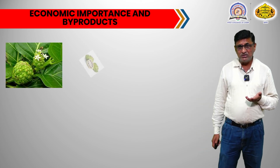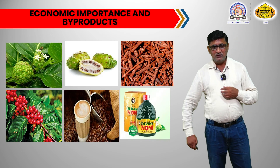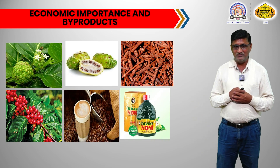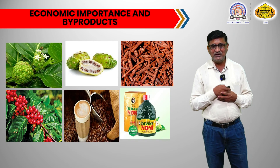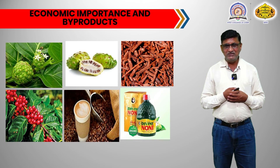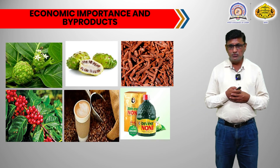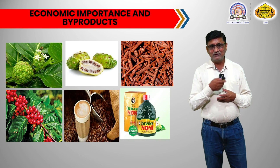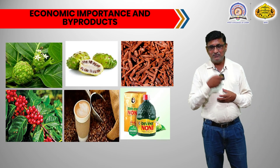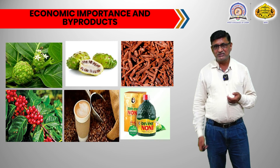Now we will see the economic importance of the plants of this family with regard to their byproducts. Several images are displayed on the screen from different plants belonging to this family. The first two images show the fruits of the Morinda plant — commonly called Bartundi fruit. The medicine Noni extract is obtained from the fruits of this particular plant and is useful for medicinal purposes. The dry seeds of the coffee plant are roasted and ground to obtain coffee powder. The bark of the Cinchona plant is used to extract the important quinine alkaloid to cure malaria.